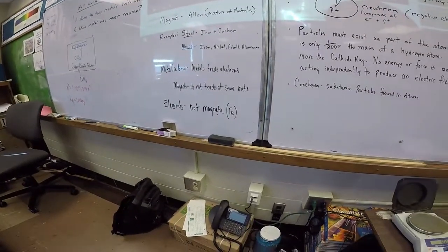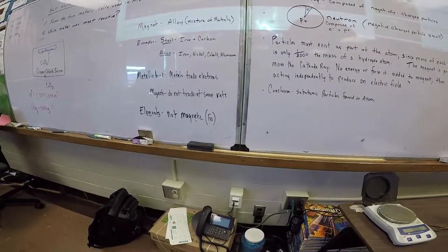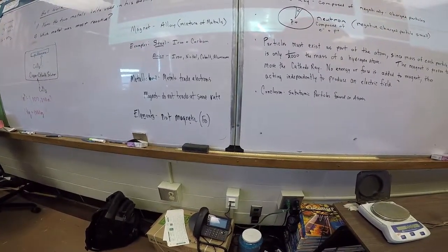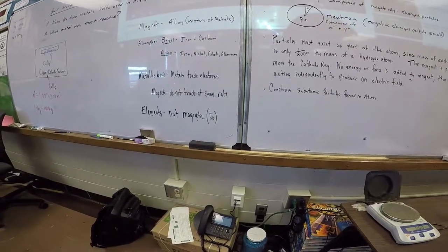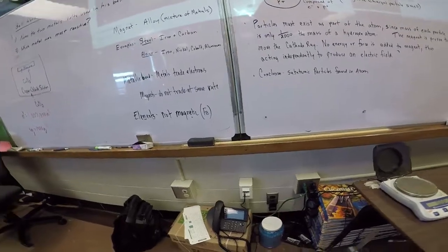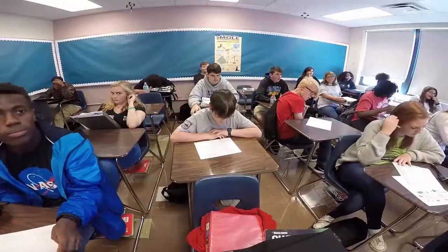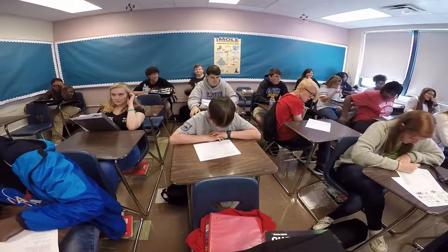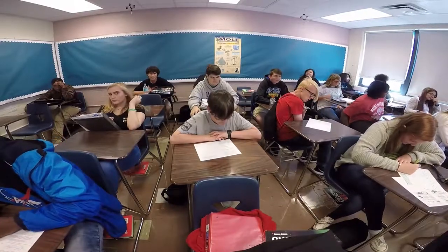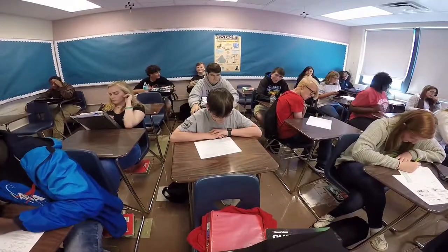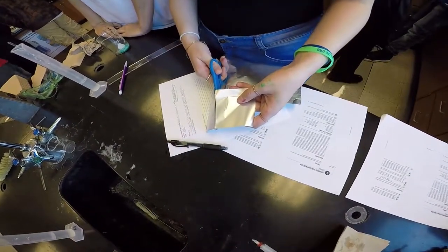Also, elements by themselves, they have zero charge. Now, iron does metallically bond with itself. However, it does not form a magnet because it's equally trading. You can equally trade with yourself. It's only when you have more than one different metal do you create this. To the anode, the positively charged electrode, the tubes are called cathode ray tubes.